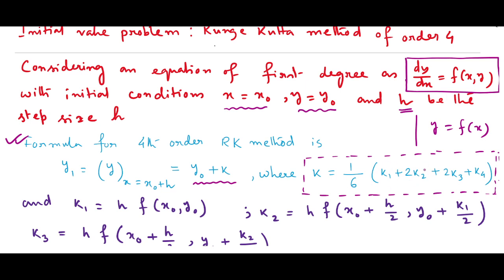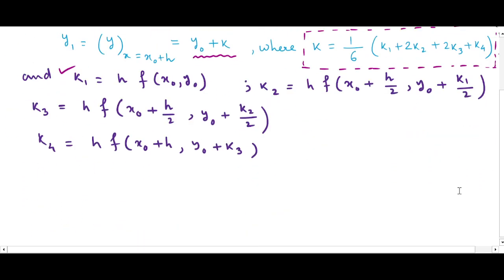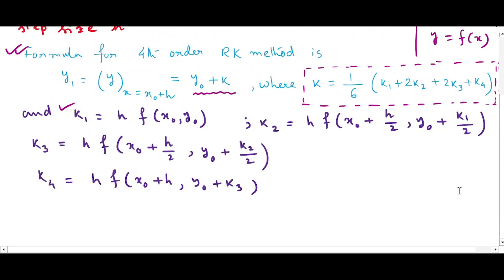k1 is h times f(x-naught, y-naught), which we can easily find since h is the step size and x-naught and y-naught are given initial values. k2 is h times f(x-naught + h/2, y-naught + k1/2). After finding k1, everything in k2 is known: h, x-naught, h/2, y-naught, and k1/2.